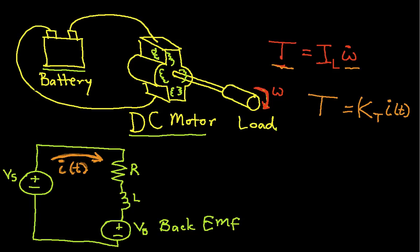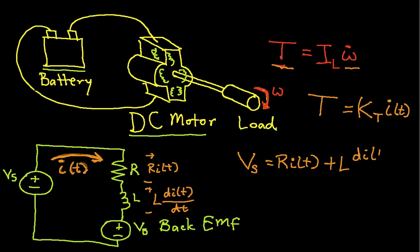So let's do the circuit analysis. We know that V sub S is equal to R times I of T, that's the voltage across the resistor, plus the voltage across the inductor. You'll remember, of course, that the voltage across an inductor is L dI/dt. So this is going to be L dI/dt plus this back EMF V sub B.